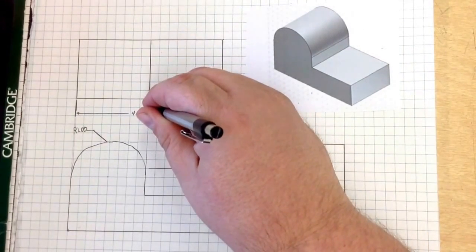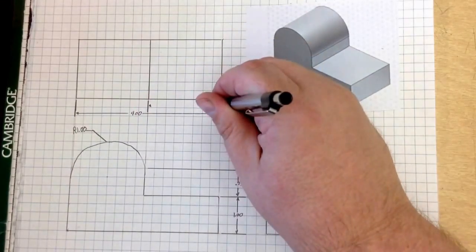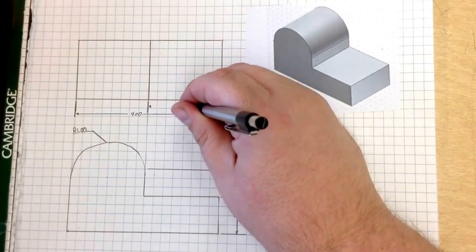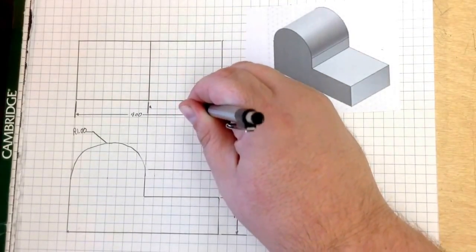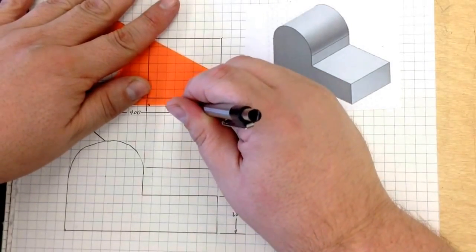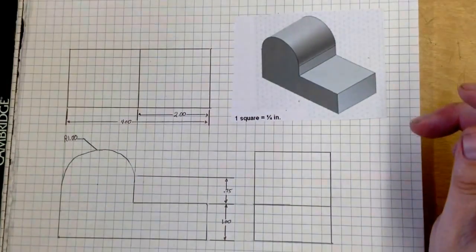And this, we need our arrows, is 2.00. And I will connect them right there.